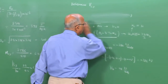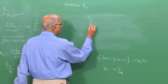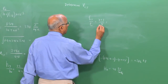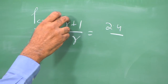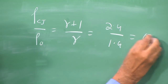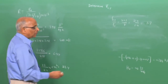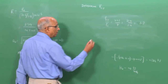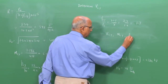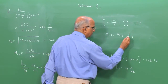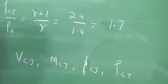Let us calculate the density behind the detonation front. We had derived ρ_CJ / ρ₀ = (γ+1)/γ = 2.4/1.4 ≈ 1.7. Note we took γ = 1.4 for both the reactant mixture and the products of combustion.